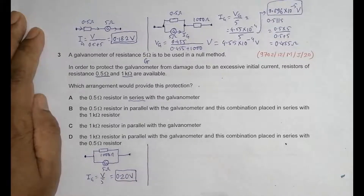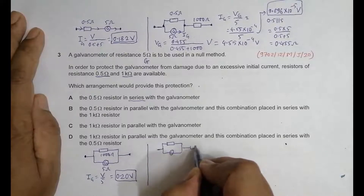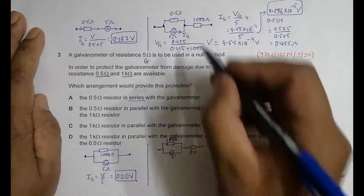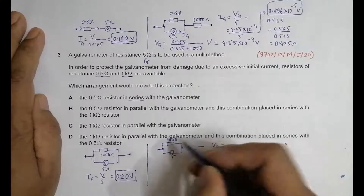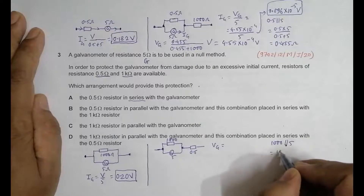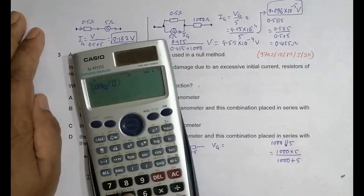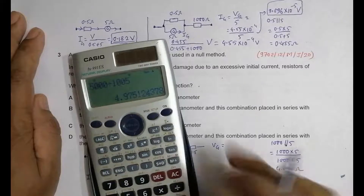In choice D, the 1 kilo-ohm resistor is in parallel with the galvanometer, and that combination is in series with the 0.5 ohm resistor. So we have 1000 ohm parallel with 5 ohm, in series with 0.5 ohm. The parallel resistance of 1000 and 5 equals (1000 × 5) / (1000 + 5) = 5000 / 1005, which equals 4.975 ohm.